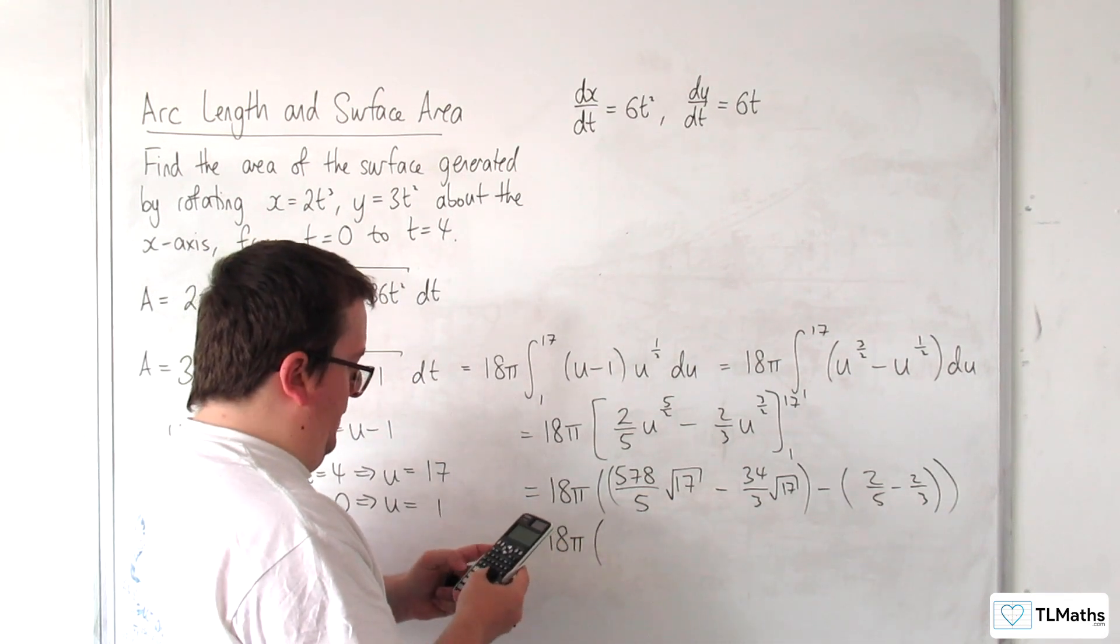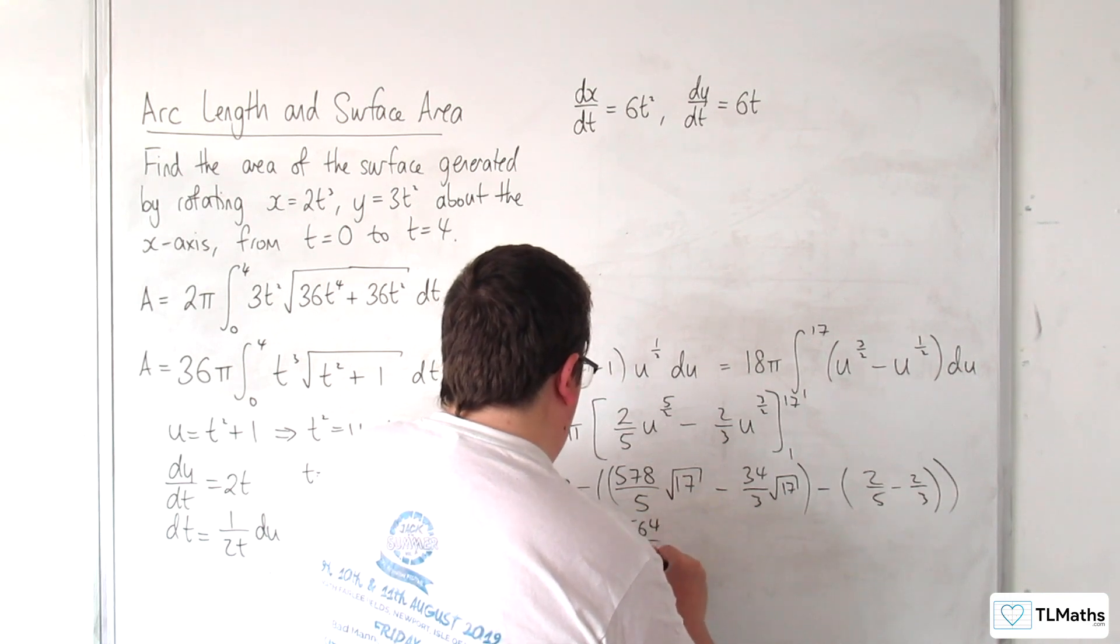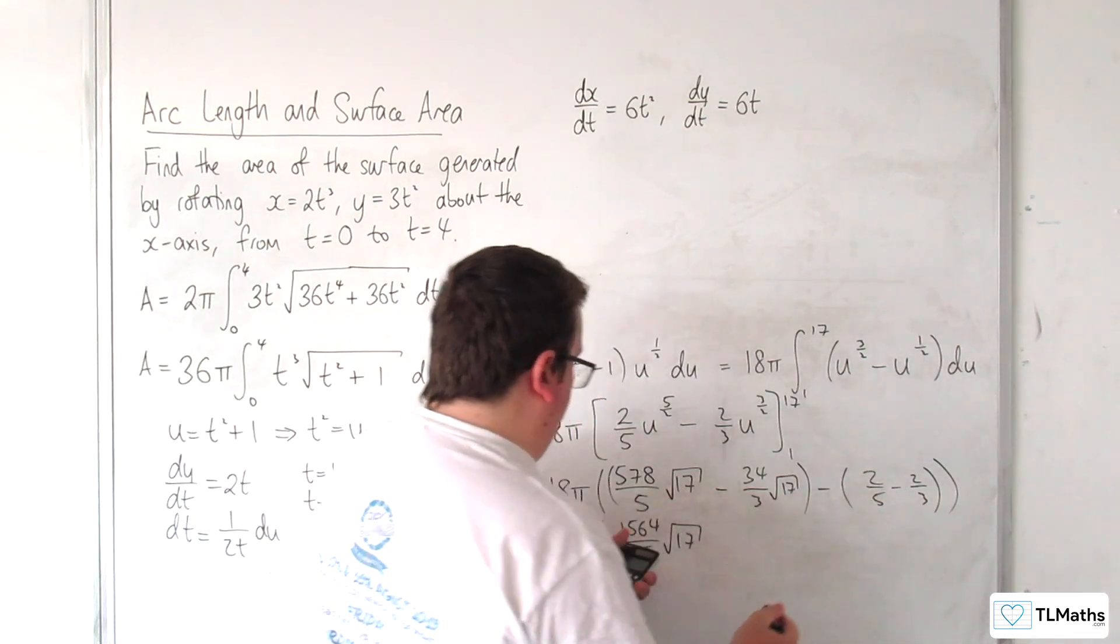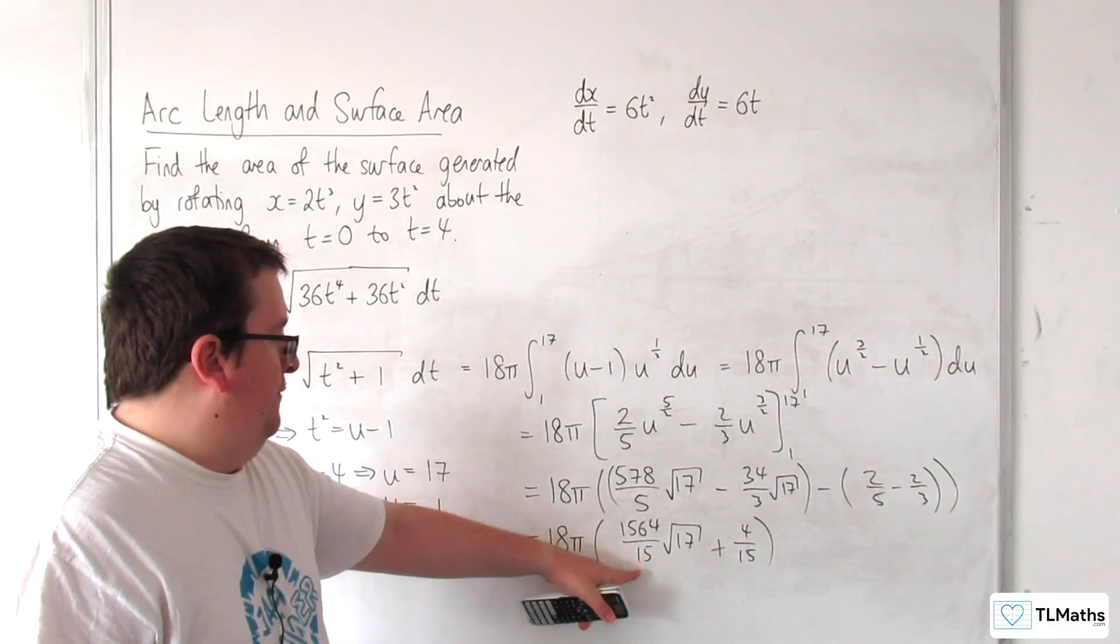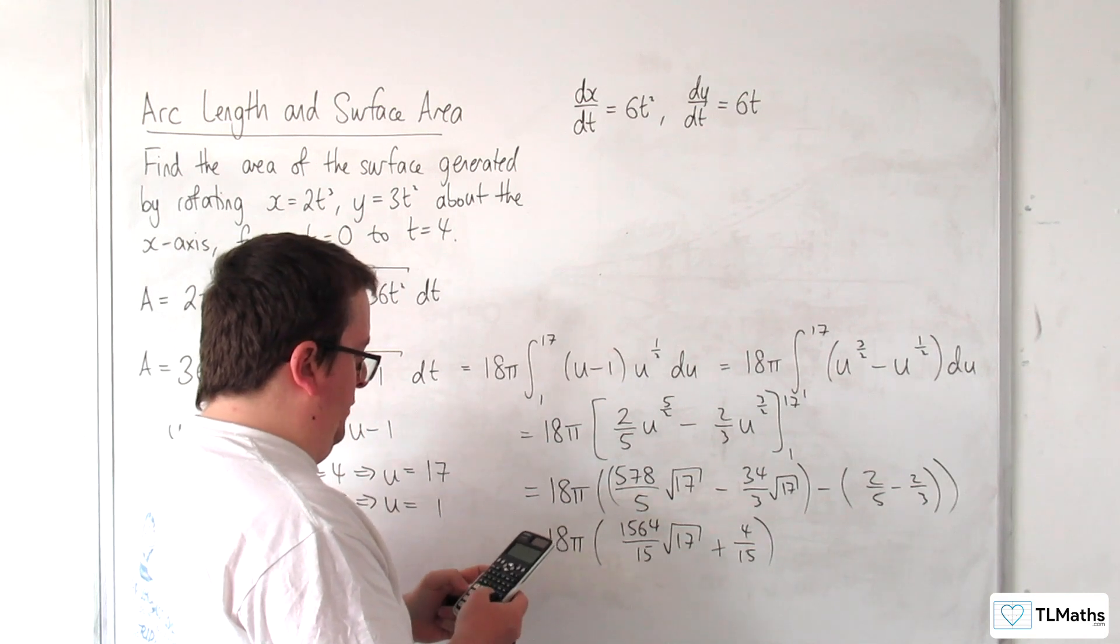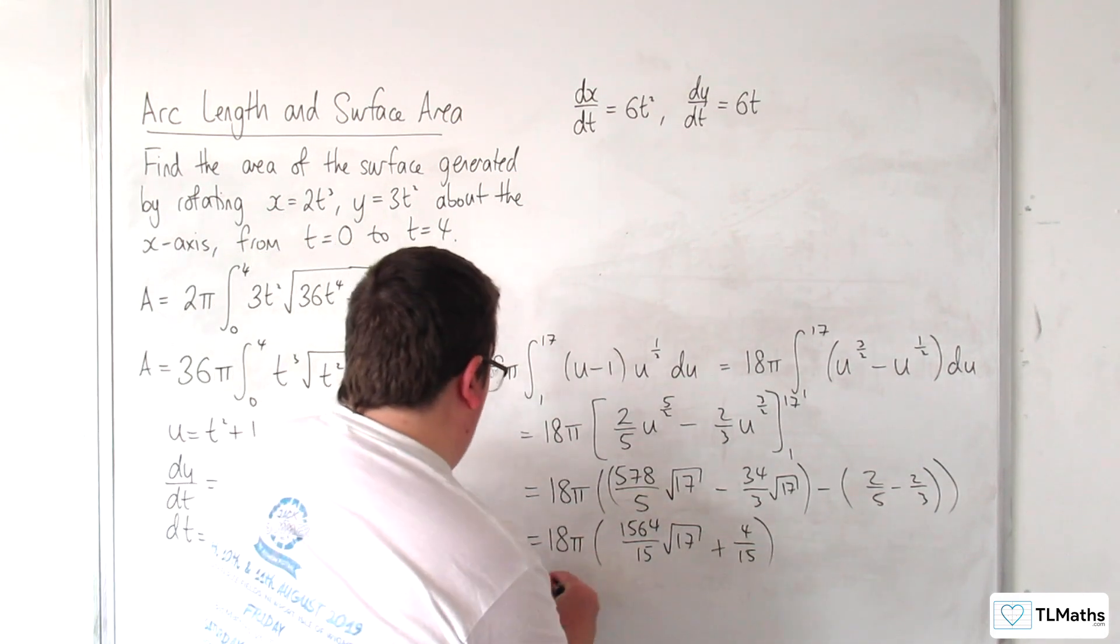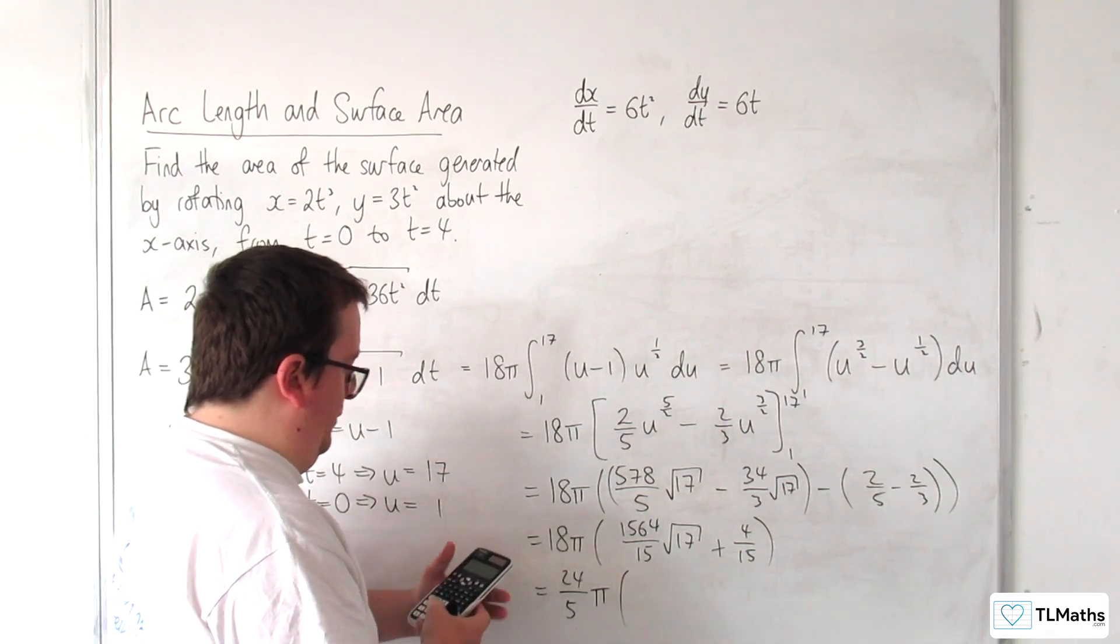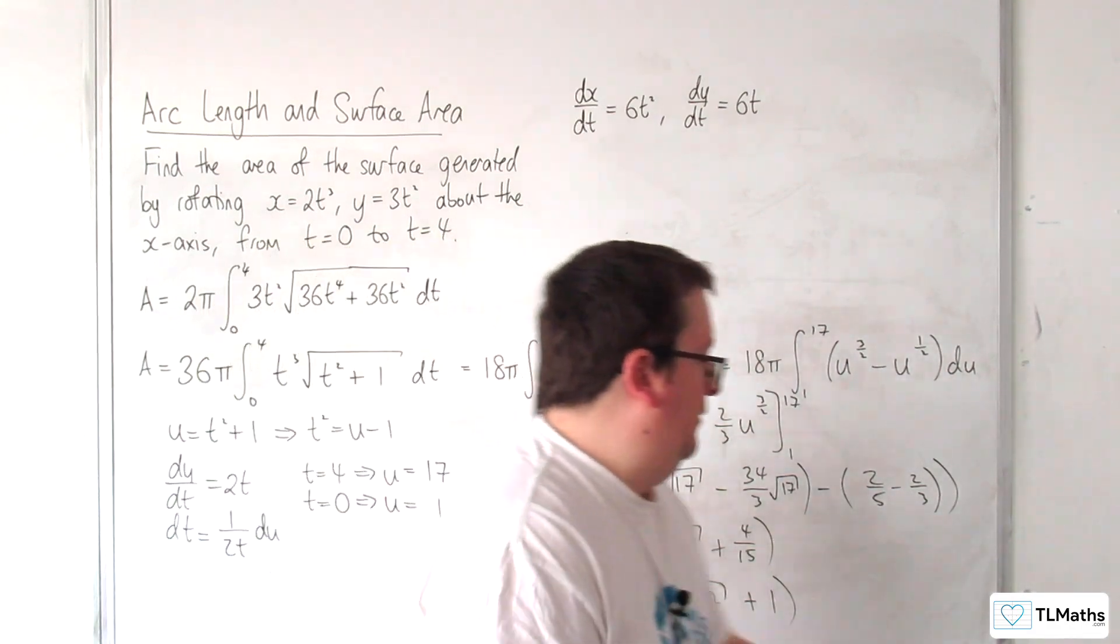Okay, so 578 over 5, take away 34 thirds, is 1564 over 15, root 17. And we've got the 2 fifths, take away 2 thirds, which is minus 4 fifteenths, so plus 4 fifteenths. Now, we can factor out the fifteenths, and can we factor out 4, so 1564 divided by 4? Yes, we can, so 18 times by 4 fifteenths is 24 fifths. And 1564 divided by 4 is 391, so 391 root 17, plus 1. So that's the nicest form you can get it into, and that is the exact surface area of this curve between 0 and 4.